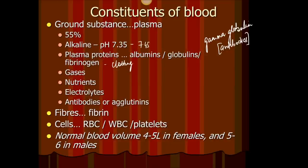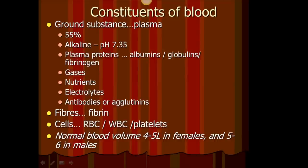Albumins are large proteins responsible for maintaining the osmotic pressure of blood. Fibrinogen is for clotting, globulins for production of antibodies. All of these proteins remain in the blood — they don't seep out of the blood vessels. Because they are present inside the blood vessel, they exert osmotic pressure, which is really important because that's how blood that is thrown out of a blood vessel can be drawn back in.